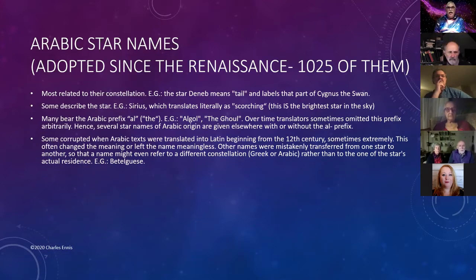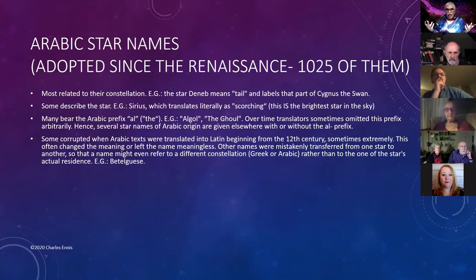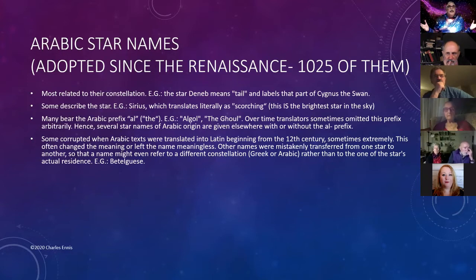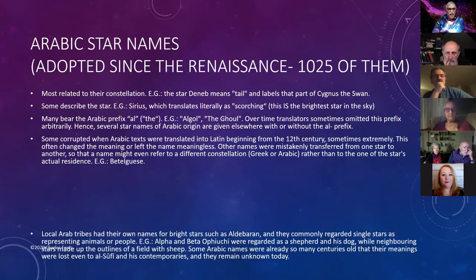Some names were corrupted when Arabic texts were translated into Latin beginning in the 12th century — sometimes extremely — changing the meaning or leaving the name meaningless. Other names were mistakenly transferred from one star to another, so the name might refer to a different constellation entirely. A modern example is Betelgeuse — the variable star that is the right shoulder of Orion — where nobody knows how it's supposed to be spelled or pronounced because it's a corruption. We've lost the meaning.